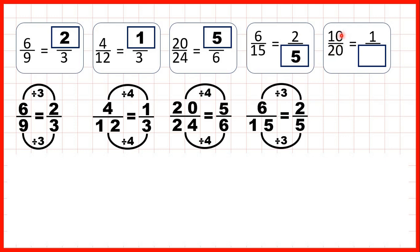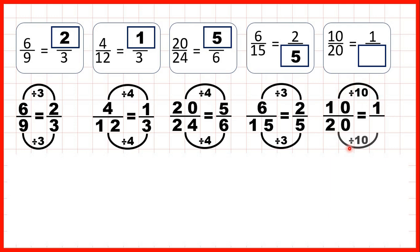Now here, we have 10 over 20, and we need to find an equivalent fraction with a numerator of 1. 10 divided by 10 is 1, because whenever you divide a number by itself, you always get 1 as your answer. And here, what we've done to the numerator, we need to do to the denominator as well. 20 divided by 10 is 2. So 10 over 20 is equivalent to 1 half, or 1 over 2.